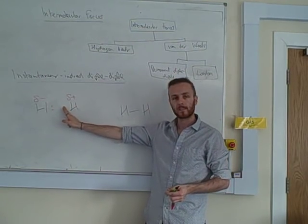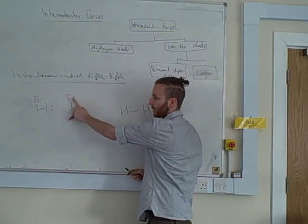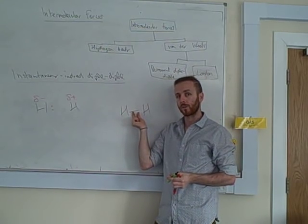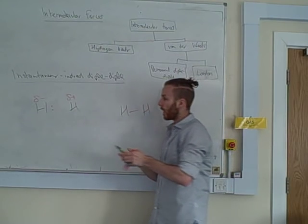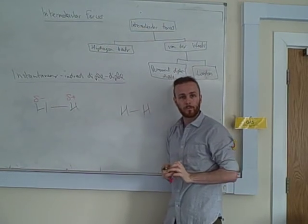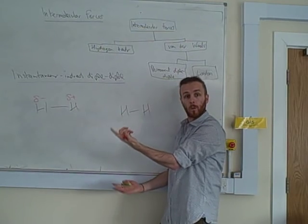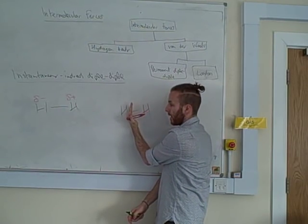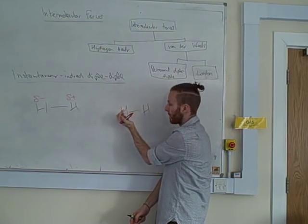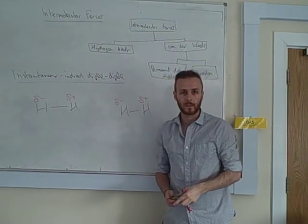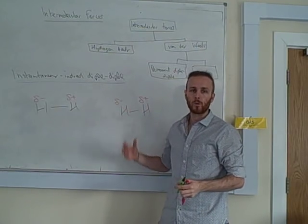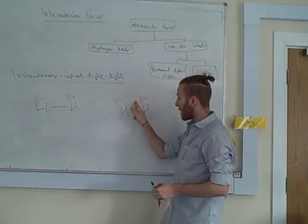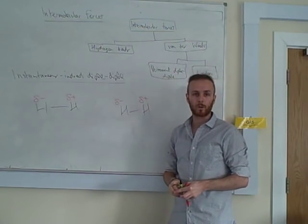However, once you get just one instantaneous dipole, then because we have a delta positive here, have a little think. What will this positive do to the negative electrons in this bond, in the neighbouring H2? Will it attract them, or will it repel them? Well, hopefully you just thought it will attract them, opposites attract. So, my negative electrons here are going to get pulled slightly closer to that positive dipole, instantaneous dipole. And so, that is going to cause what we call an induced dipole in the neighbouring molecule. Induced just means to make, made.